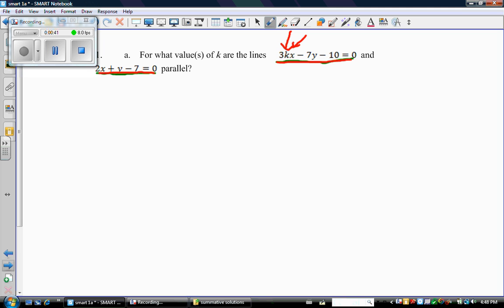Alright, so let's start with something familiar. We know what parallel means. If we're talking about two lines, we know that parallel means that they have the same slope. So I need to find the slope of both of my lines.